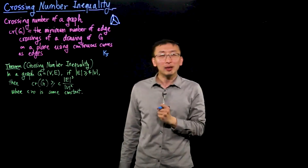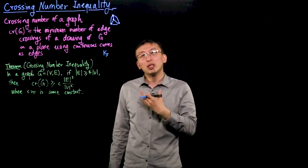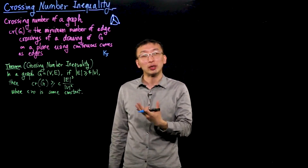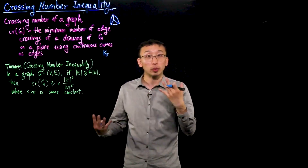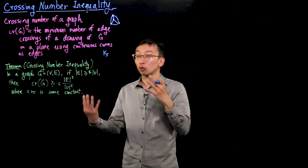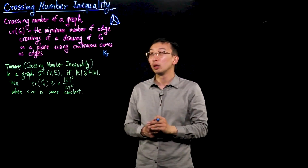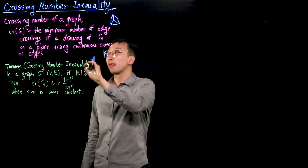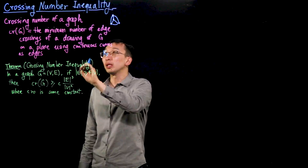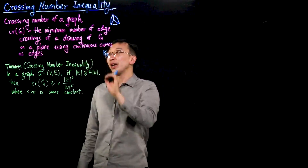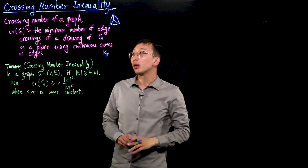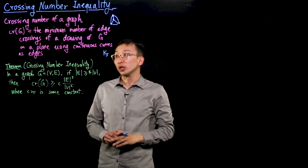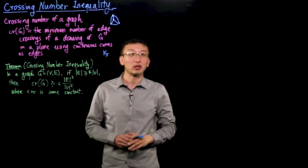In that case, you want to know what's the minimum number of edge crossings you can have in any possible drawing of this graph. The crossing number of a graph is defined to be the minimum number of edge crossings of a drawing of G on a plane using continuous curves as edges.